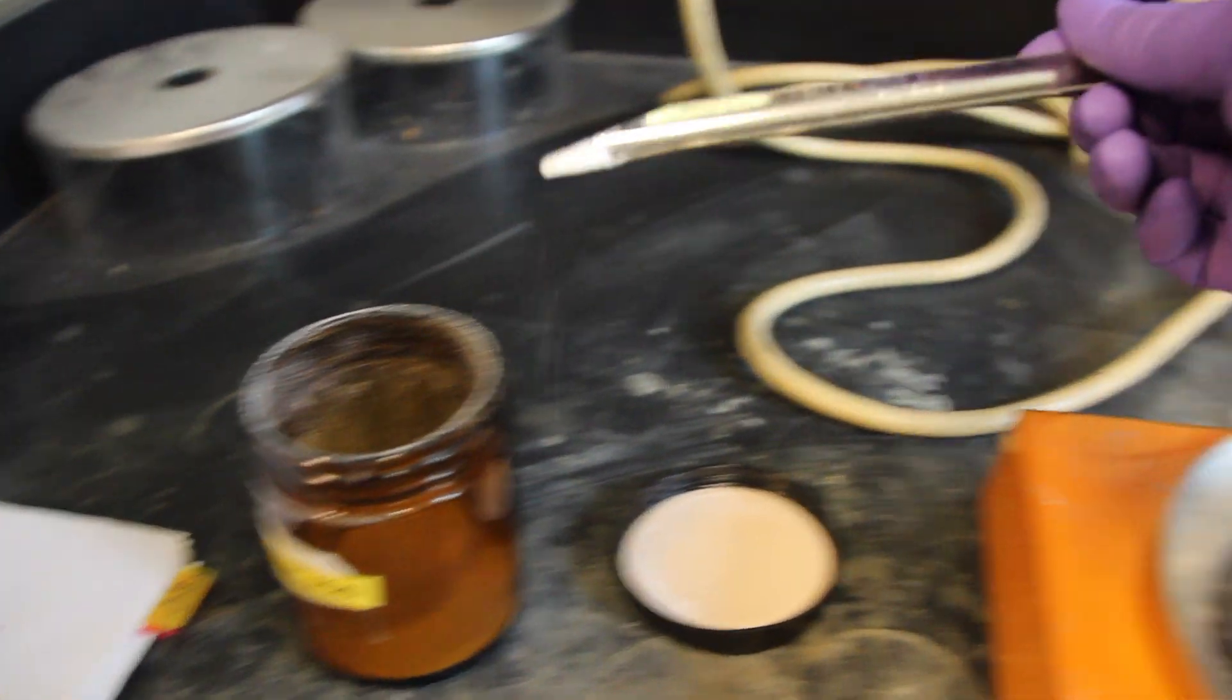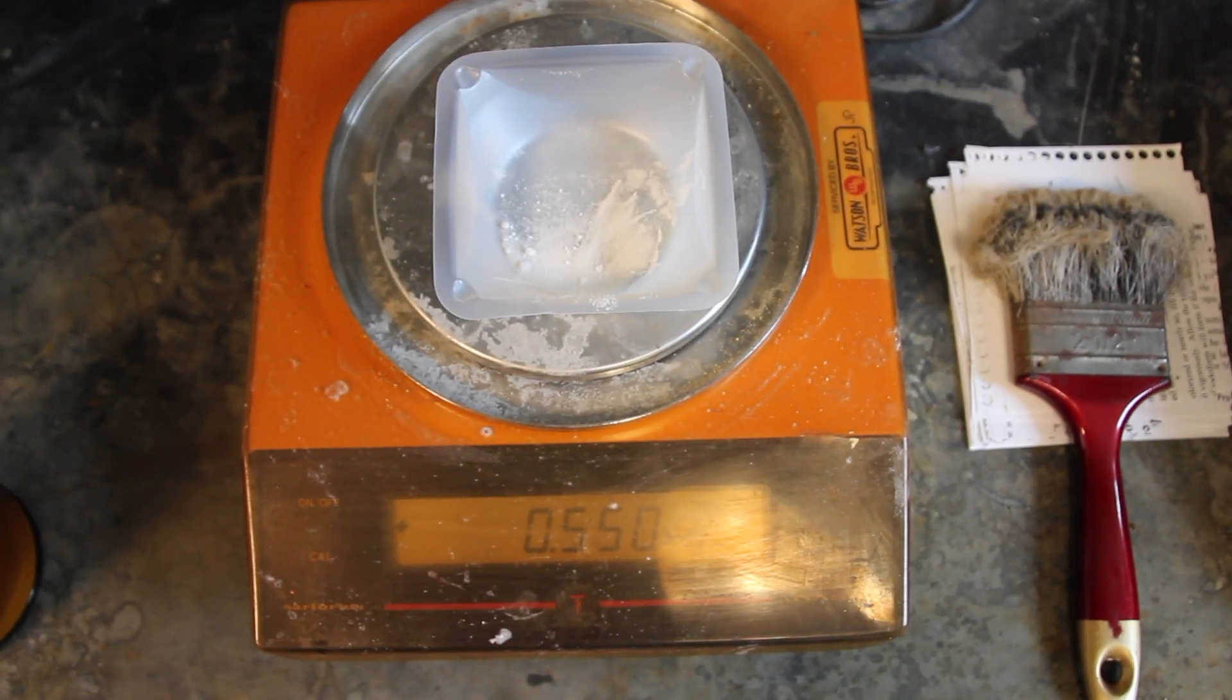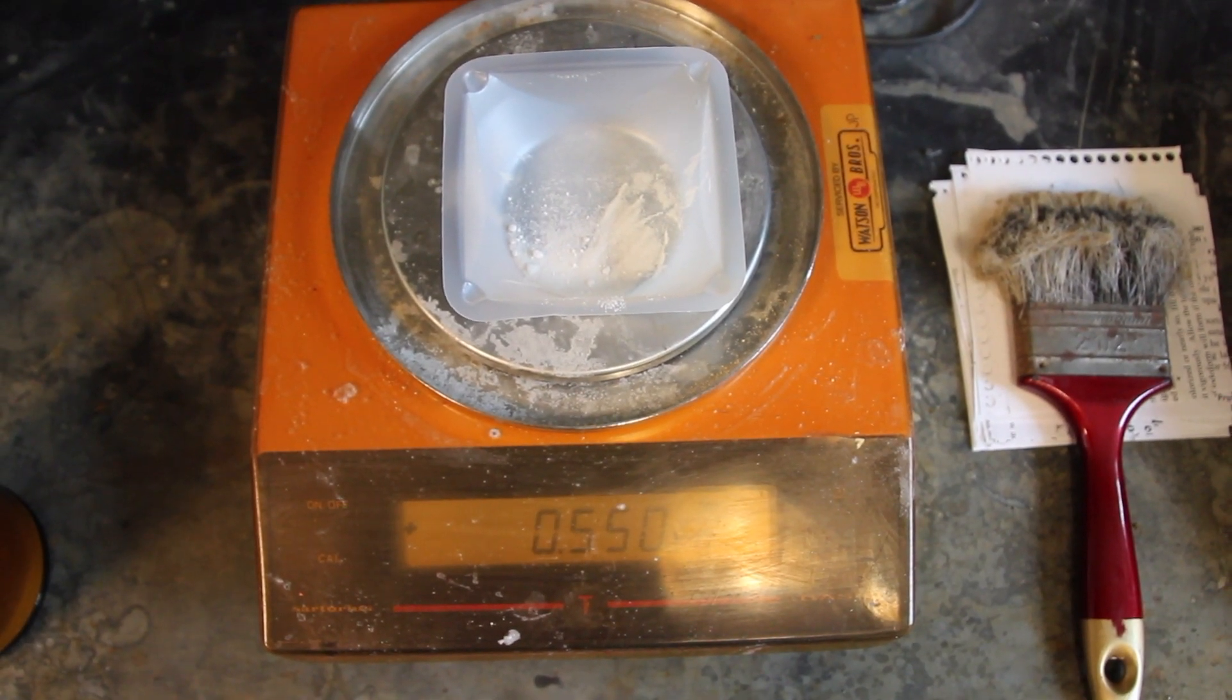To do this, measure out 0.5 grams of toluic acid into a 25 milliliter Erlenmeyer flask.